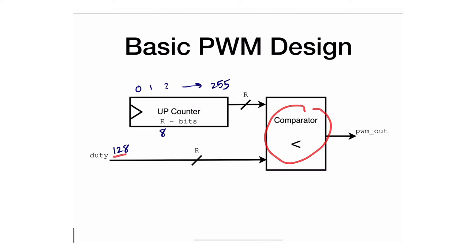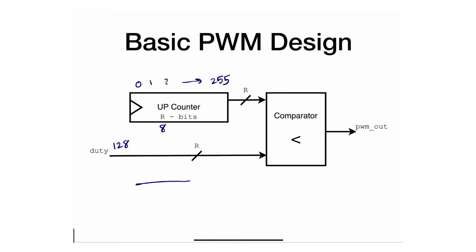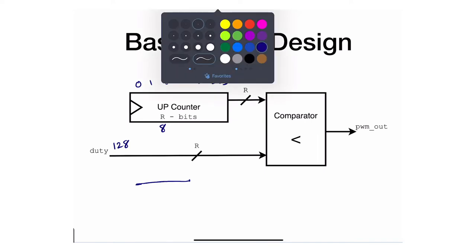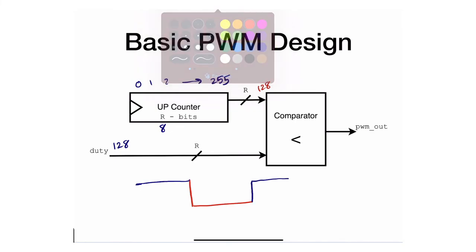While the count is less than 128, the output is asserted to 1. This continues all the way up to count 127. When the counter reaches 128, 128 is not less than 128, so the output drops to 0. It stays at 0 for the rest of the count all the way to 255, and then repeats as the counter rolls back to 0. This produces the PWM waveform.